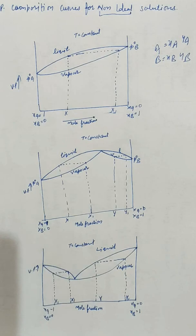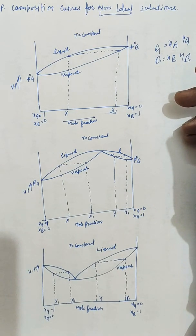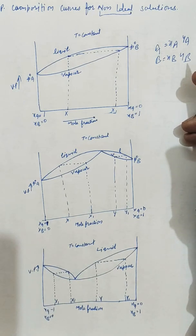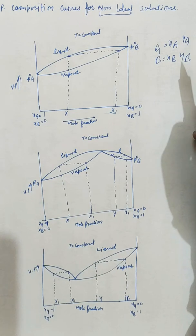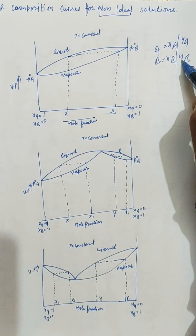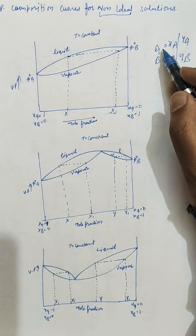Components A and B are completely miscible with each other — miscible means they can be mixed easily at any temperature. The composition of the vapor phase is different from that of the liquid phase. The composition of the vapor phase in equilibrium with the solution is determined by the partial pressures of the components. Here y_A and y_B are the mole fractions of components A and B in the vapor phase.